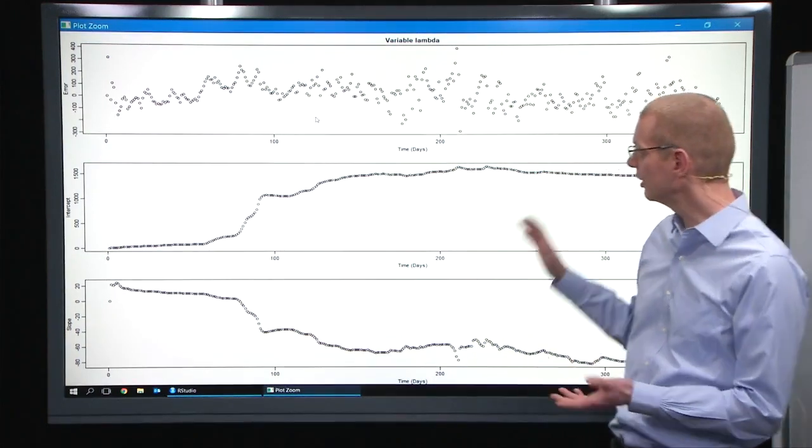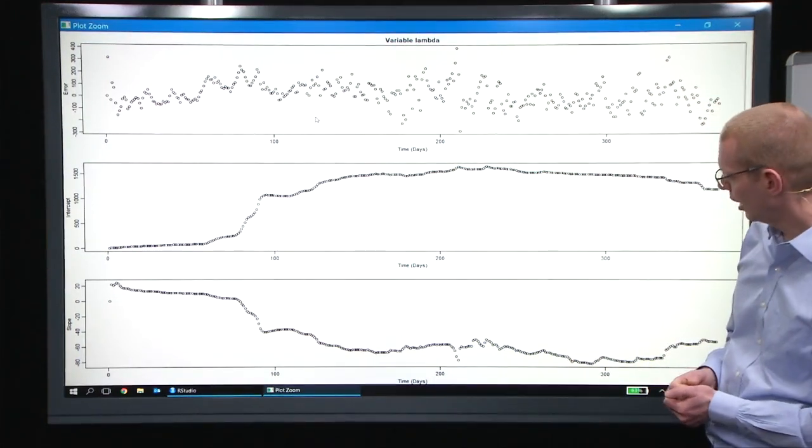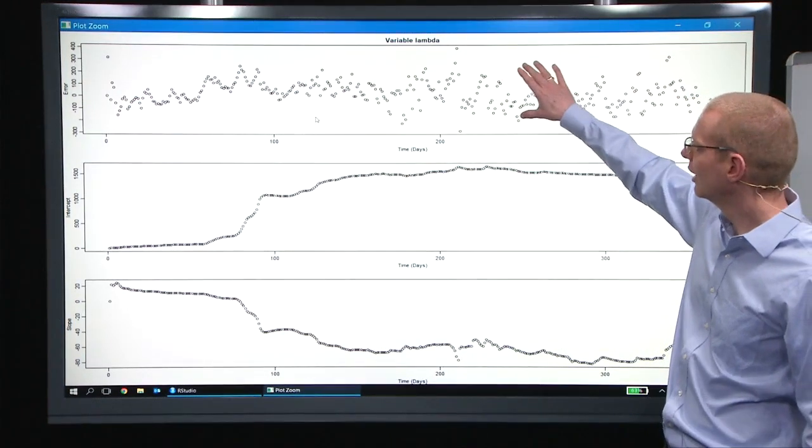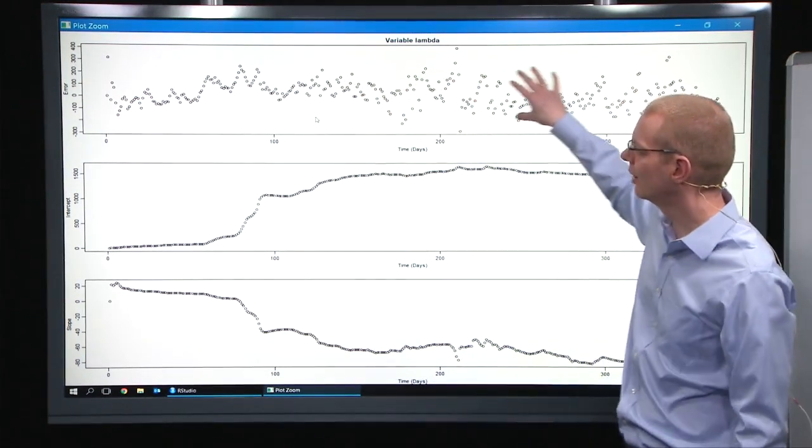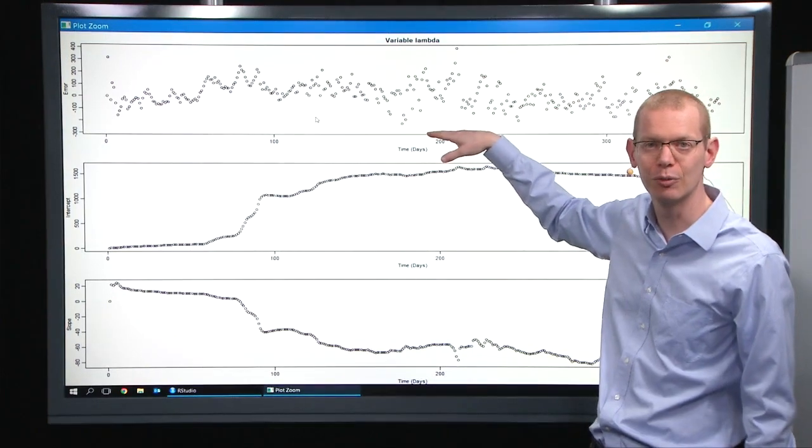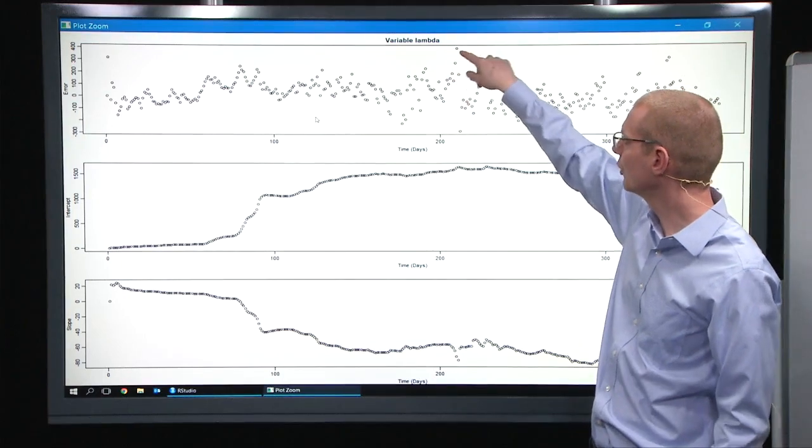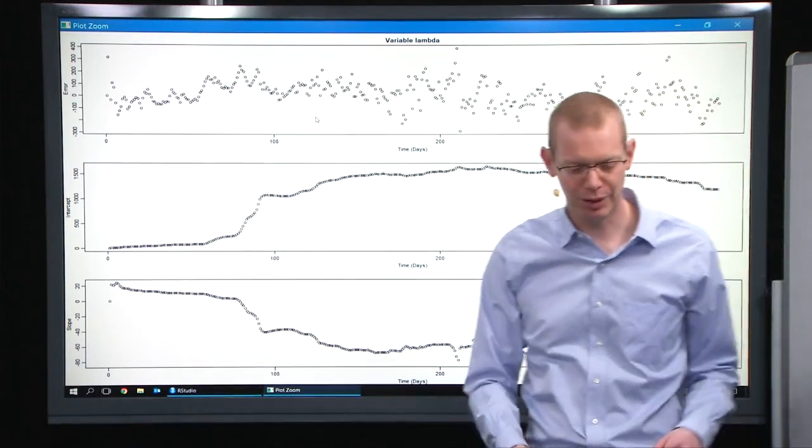So what we see here is it looks pretty much like what it was before. The dip here is not so great, and the prediction errors up here, you don't have this minus 600 anymore. You have a minus 300 and a plus 400, but it's not as bad as it was.